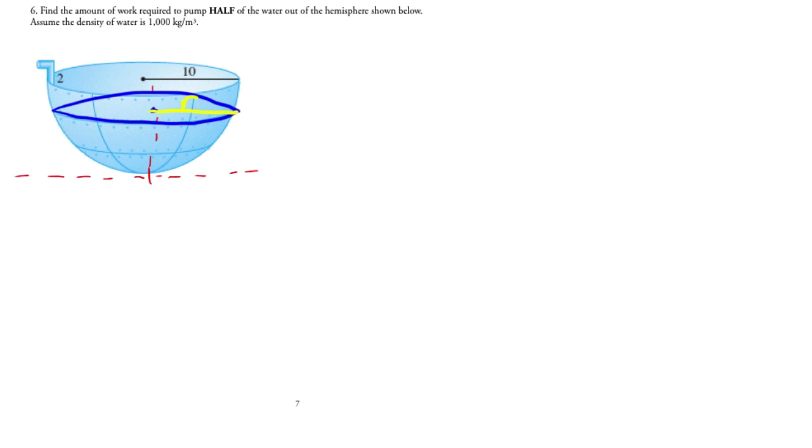And so what I need to do is find the amount of work required to take this slab of water from where it is, which in this case, because of where I've placed my axis, it's located at y. And I need to find the work required to get it from y up and out of this spout which is 2 higher than the top of the hemisphere.